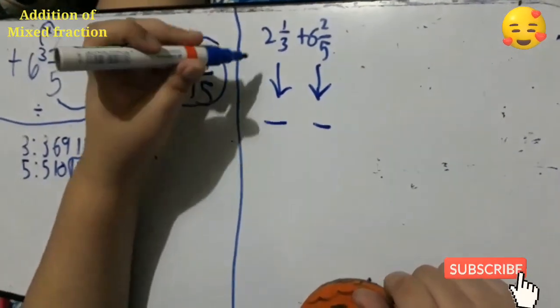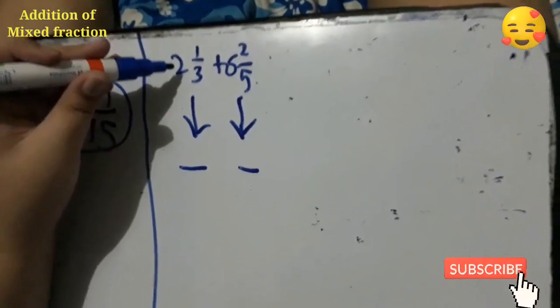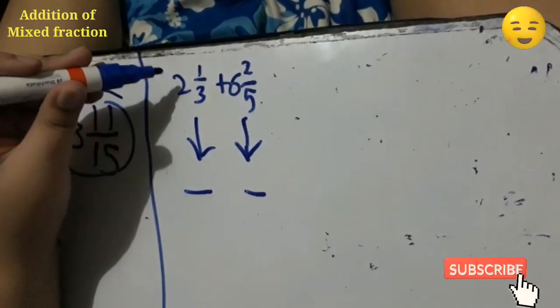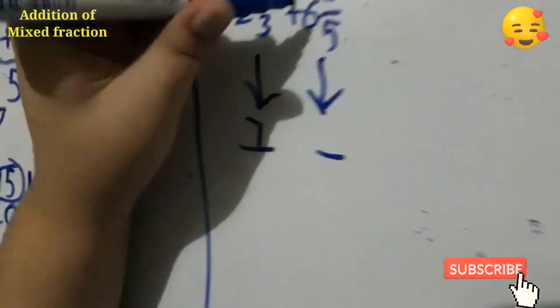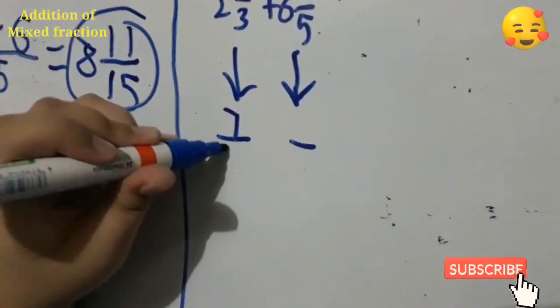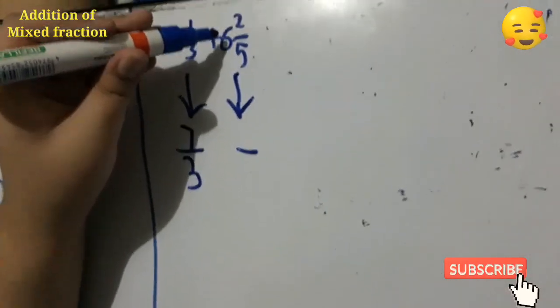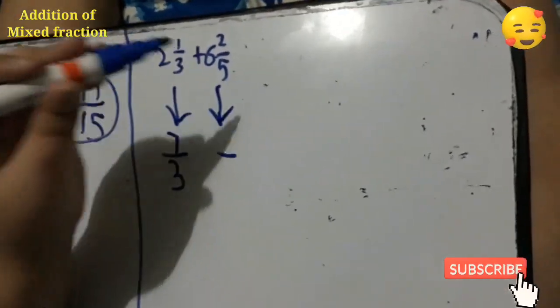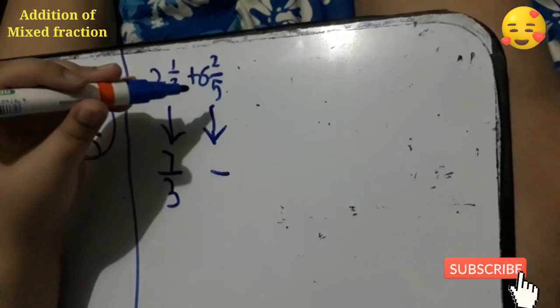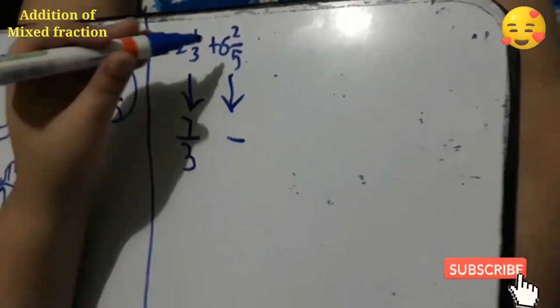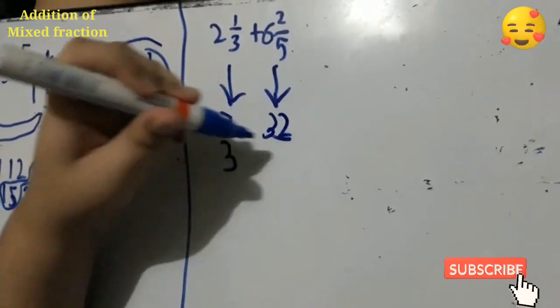How to change into improper fraction. All you have to do is multiply 2 times 3, then plus 1 is 7. The denominator we're gonna copy, which is 3. How about the second fraction? We're gonna multiply 6 and 5. 6 times 5 is 30. So all you have to do is add in the numerator, which is 32. 32 over 5.